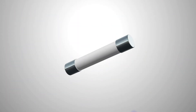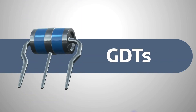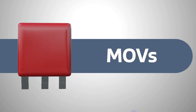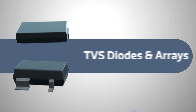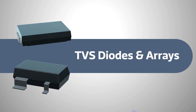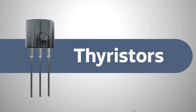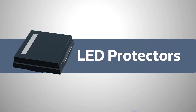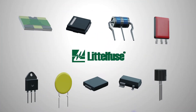Beyond standard cartridge fuses, protection devices include PTCs, GDTs, MOVs, ESD suppressors, TVS diodes and arrays, thyristors, sedactors, and LED protectors, each with unique properties, applications, or benefits.